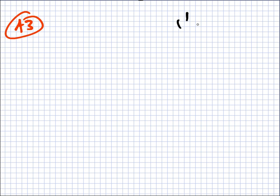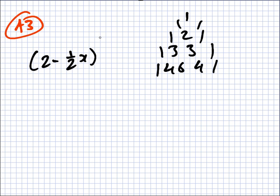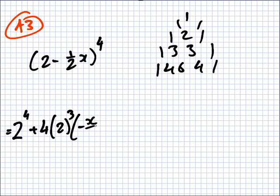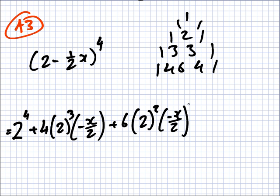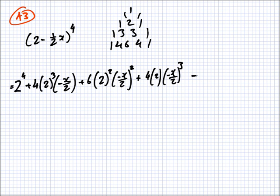A3. Expand 2 minus a half x to the power 4. You can use binomial or Pascal's triangle since it's only to the power 4. So the first term is 2 to the power 4, then 4 times 2 cubed times minus x over 2, then 6 times 2 squared times minus x over 2 squared, then 4 times 2 times minus x over 2 cubed, and finally minus x over 2 to the power 4.